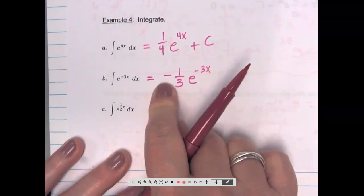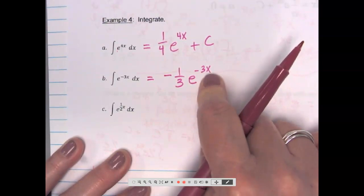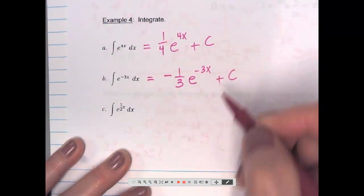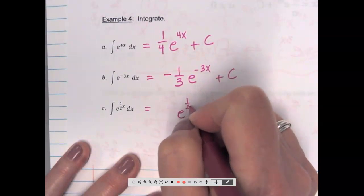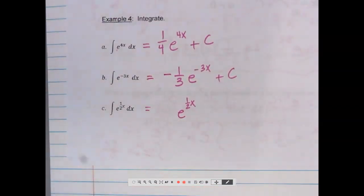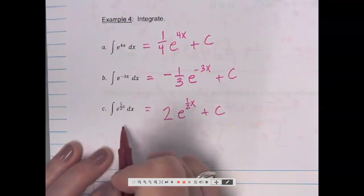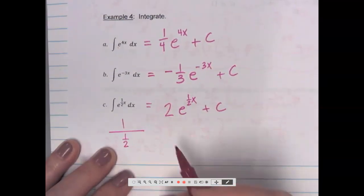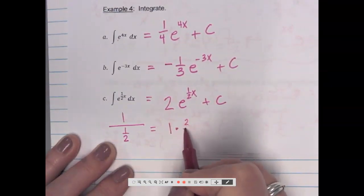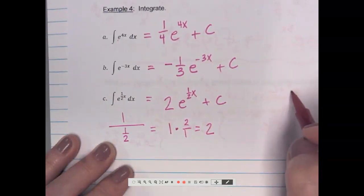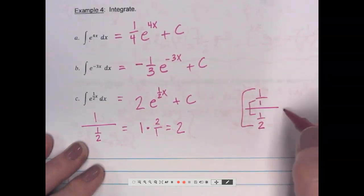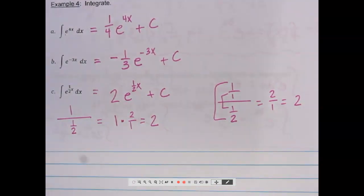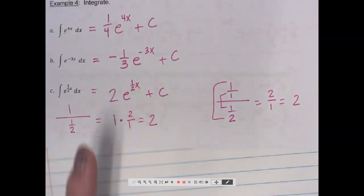For e to the negative 3x: negative 1/3 e to the negative 3x, because the coefficient was negative 3, so you put 1 over negative 3. For e to the 1/2 x: I know I have to have e to the 1/2 x, but then when I put 1 over 1/2, what does that really become? Using keep-change-flip, 1 over 1/2 is 2. So the antiderivative is 2e to the 1/2 x plus C.